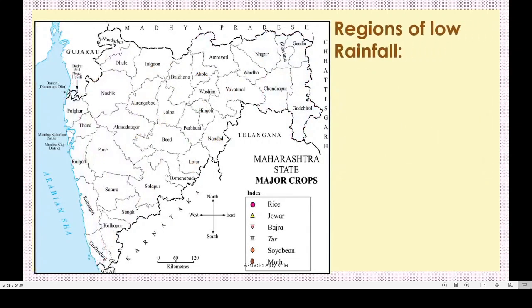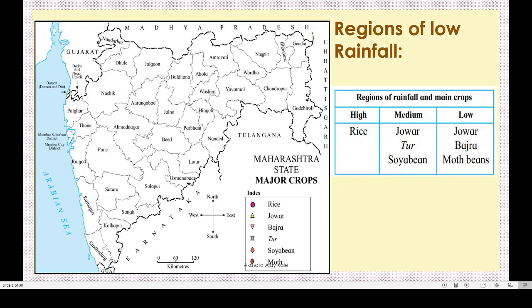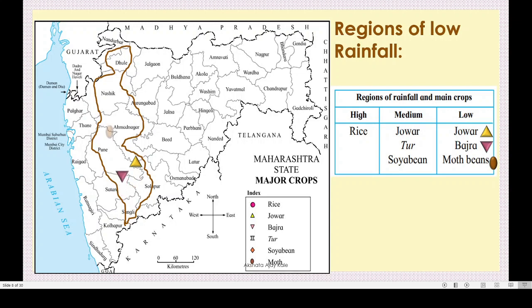The third region is low rainfall. In the low rainfall area, we grow jawar, bajra, and moth beans - that is matki. On the map, this is the area where we get low rainfall. Here we will show these three symbols. The low rainfall districts include Dhule, Nasik, Ahmadnagar, some parts of Pune, Solapur, and Sangli.